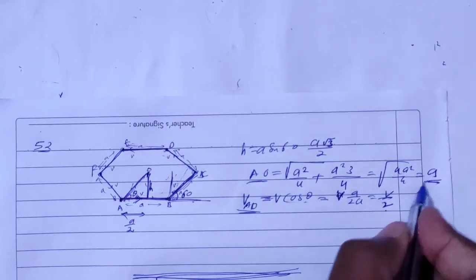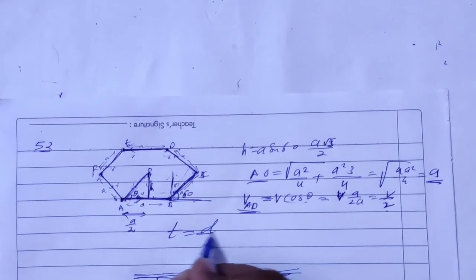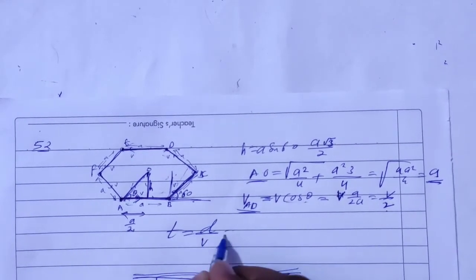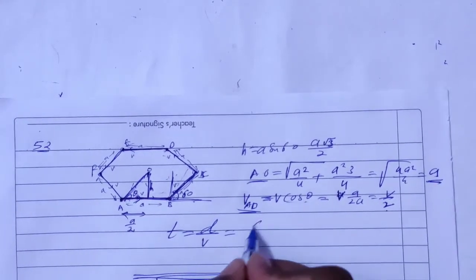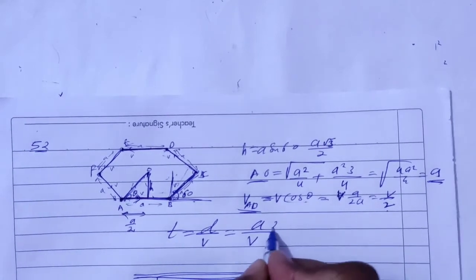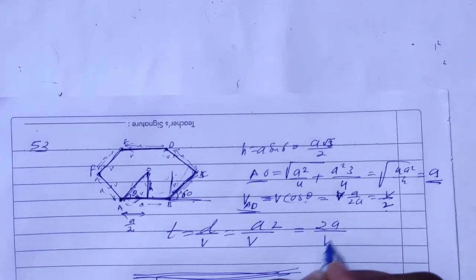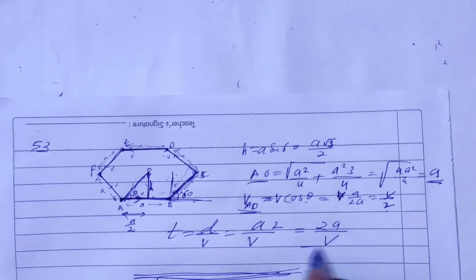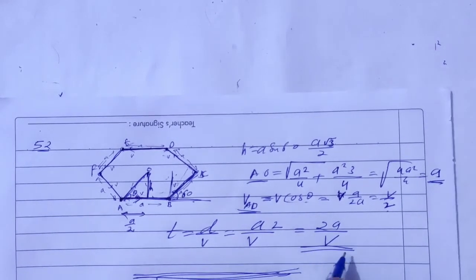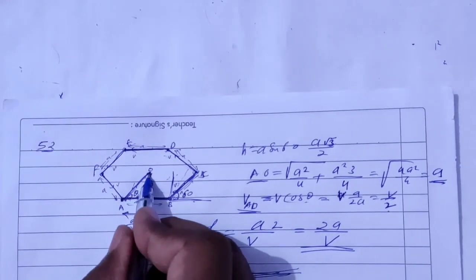Displacement is A and velocity is V/2. Time equals displacement upon velocity, so time = A divided by (V/2) = 2A/V. This is the time for all the particles to meet.